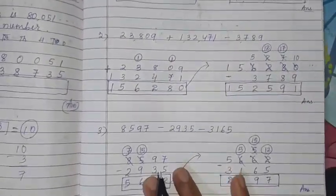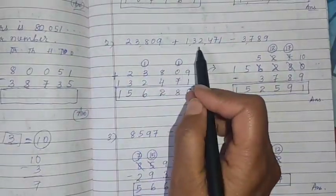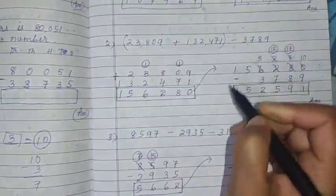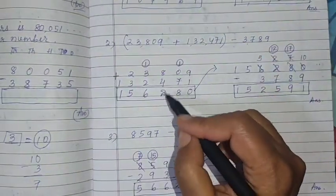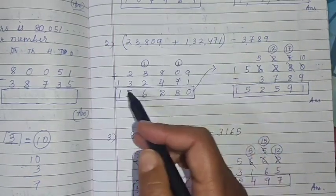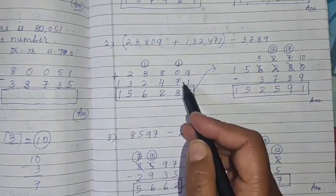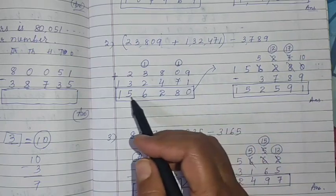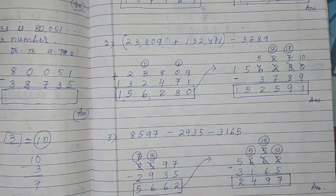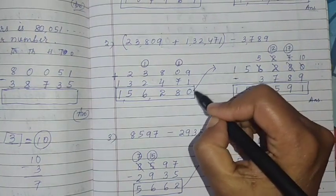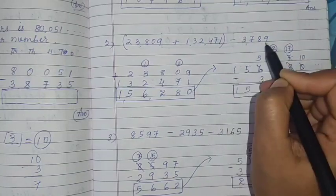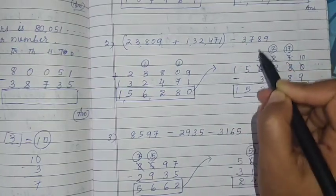Same way, see the next question. The first two addition is there, next subtraction. The first two numbers you put in bracket, then you do arrange the number and do addition. 23,809 plus 1,32,471, and after adding we got 1,56,280. This number you take, minus this, so we'll put subtraction and next third number we'll write and do subtraction.